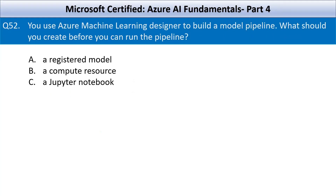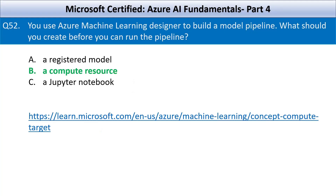Next question: you use Azure Machine Learning Designer to build a model pipeline. What should you create before you can run the pipeline? Your options are a registered model, a compute resource, or a Jupyter notebook. Before you can run a pipeline in Azure Machine Learning Designer, you must have a compute resource set up. This compute is needed to execute the training and testing of your model and run any data preparation or transformation steps in your pipeline. That's all for this part of the series — see you soon in the next part of our Microsoft Certified Azure AI Fundamentals ultimate course.